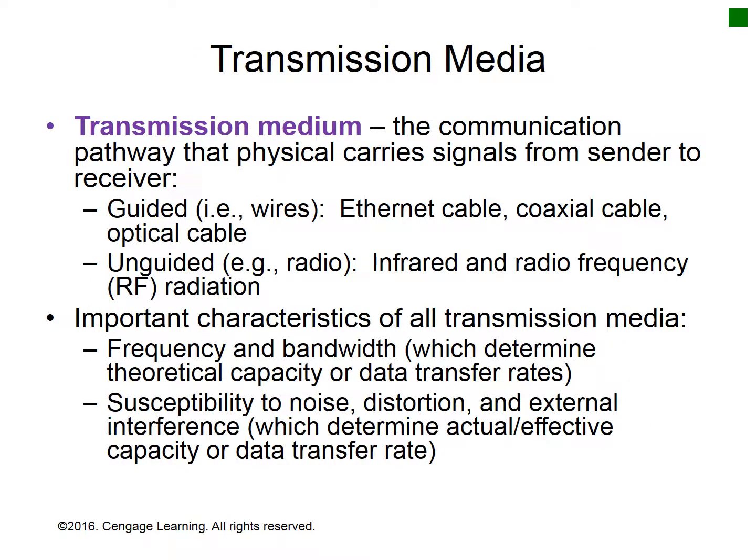Important characteristics of transmission media include raw data transfer rate, bandwidth, and susceptibility to noise, distortion, external interference, and attenuation.